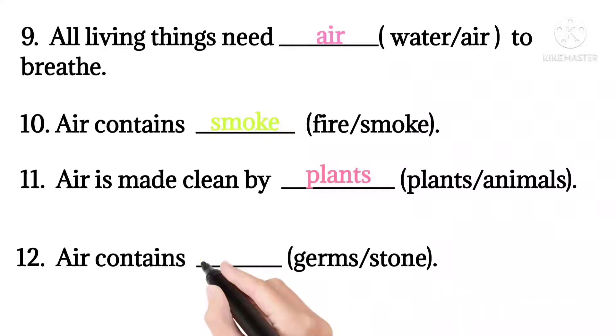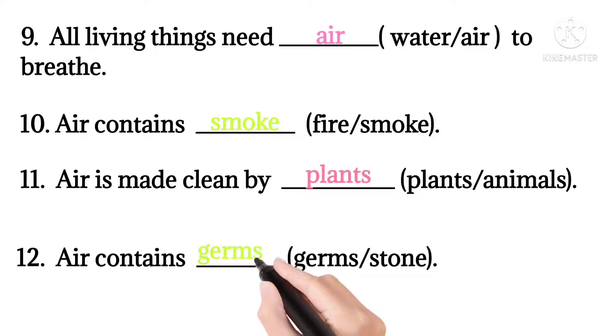Question 12: Air contains germs or stone. Correct answer: germs. Germs can make us ill.